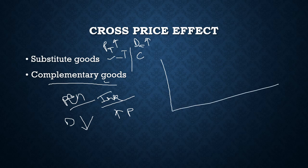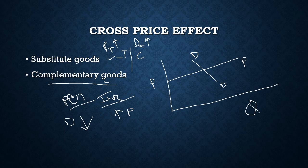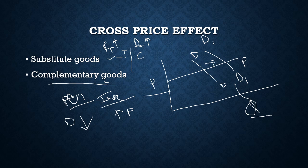On the diagram, price is kept constant on the y-axis and quantity is on the x-axis. This is the demand curve for coffee, where price of coffee is on y-axis and quantity demanded of coffee is on x-axis. When price of tea increases, demand for coffee also increases, hence there is a rightward shift in the demand curve. When price of tea decreases, there is a leftward shift in the demand curve of coffee because people prefer more tea. The same logic applies to complementary goods.